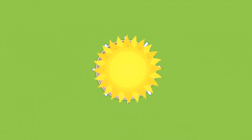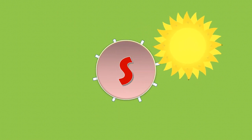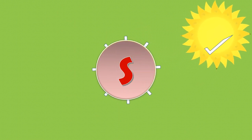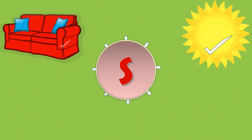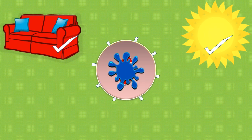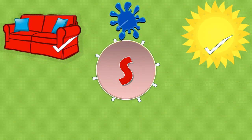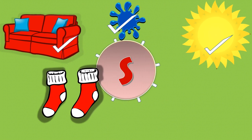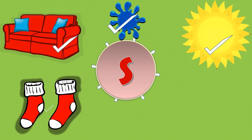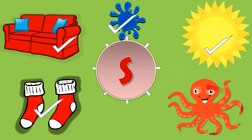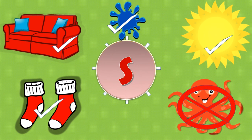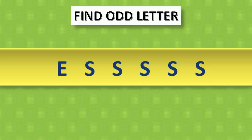S. S for sun, correct, yes. S for sofa, correct, yes. S for splash, correct, yes. S for socks, correct, yes. S for octopus — no, it's wrong. Find odd letter.